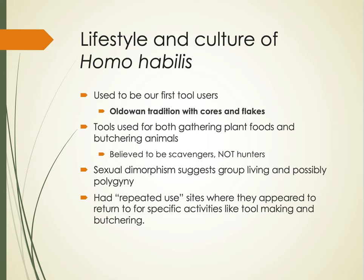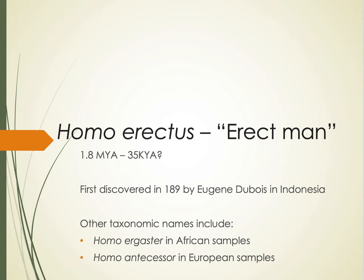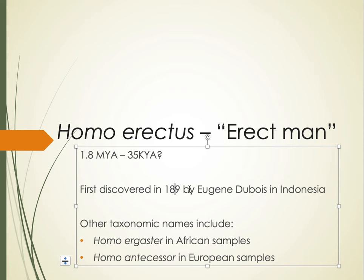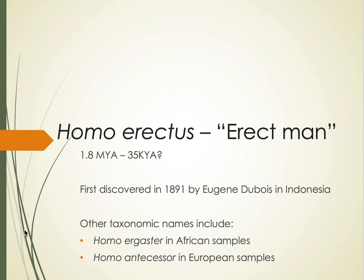As we move along the evolutionary line, we meet Homo erectus, which translates to erect man. This species appears as early as 1.8 million years ago, and there's debate about whether they were around as recently as 35,000 years ago. The first Homo erectus was discovered by Eugene Dubois in Indonesia in 1891 — a huge discovery, as it was the first fossil found outside of Africa. Homo erectus is the first species to leave Africa. Much like Homo habilis, Homo erectus also has a wide range of samples and diversity.